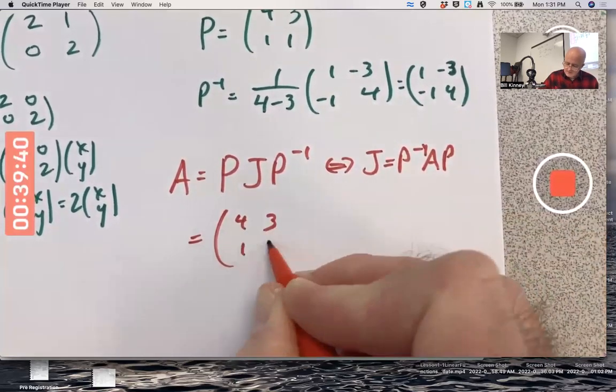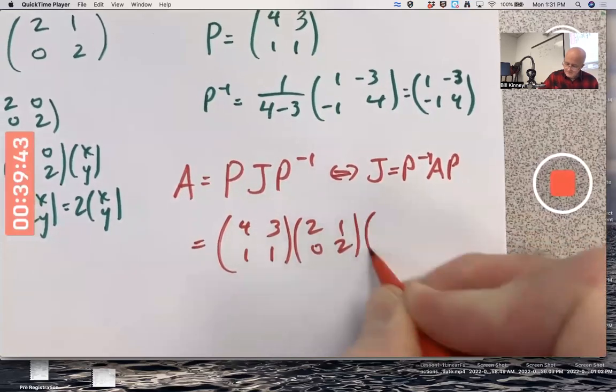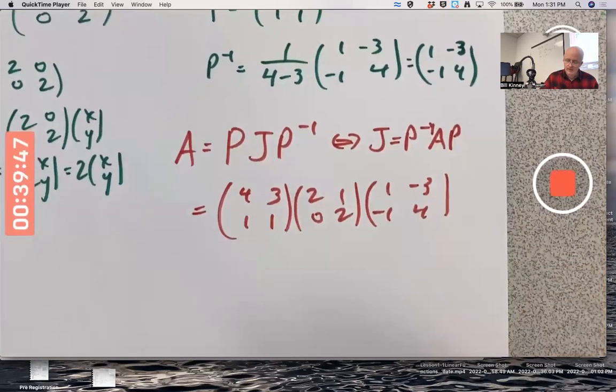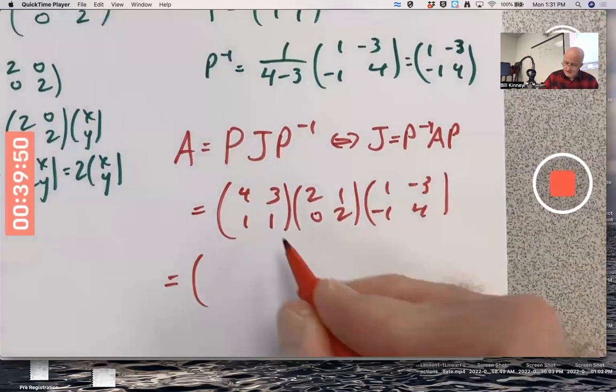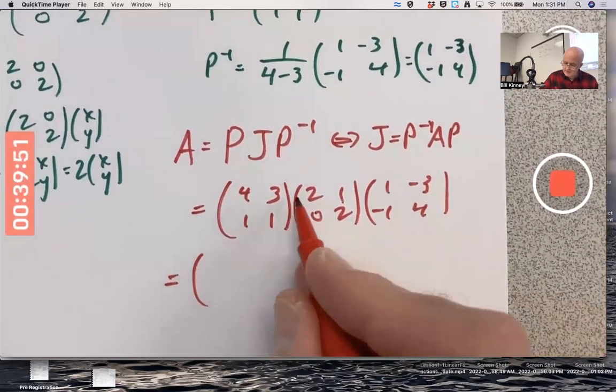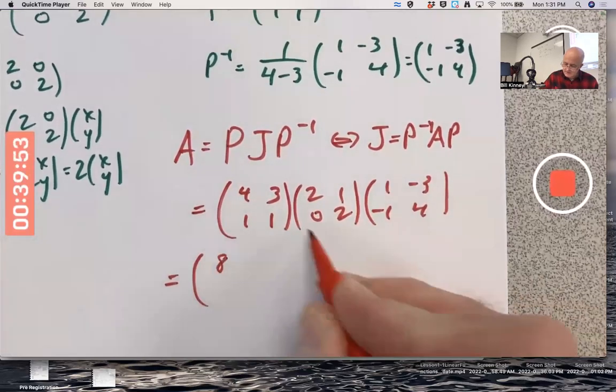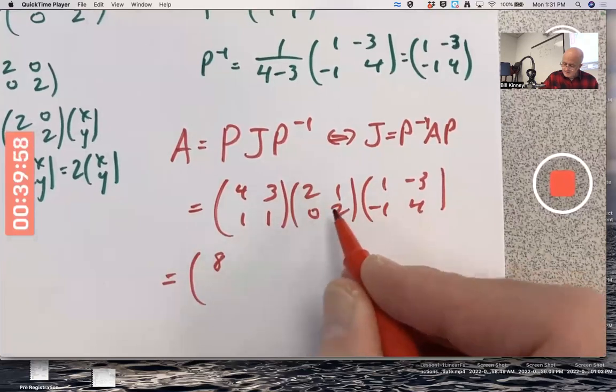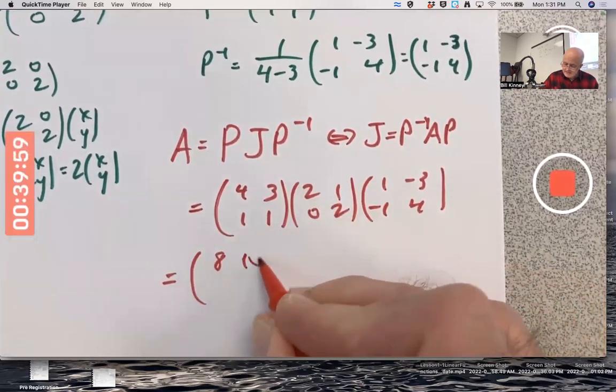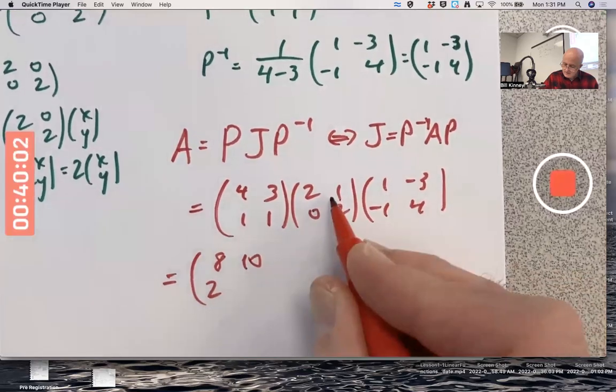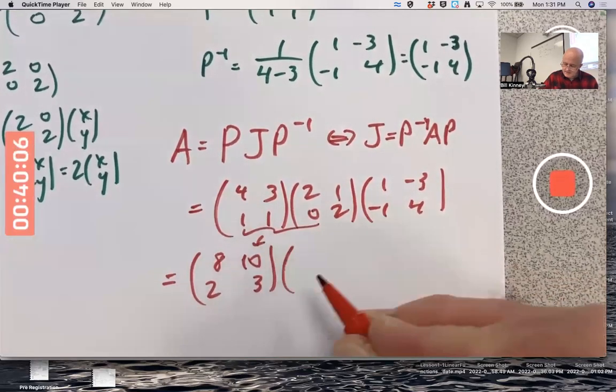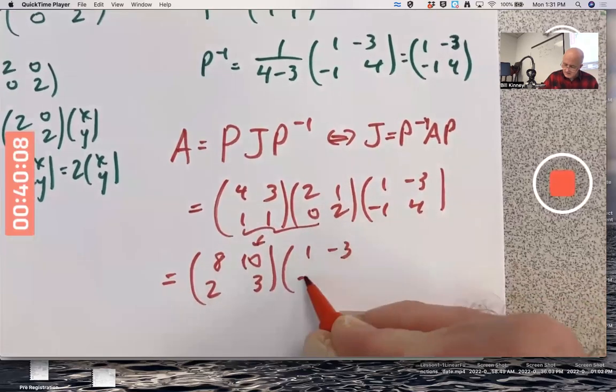Hang with me here. So let's see what happens when we do this. Multiply it out. I'll multiply the first two here. Four times two is eight. Three times zero is zero. Four times one plus three times two is going to be ten. One times two is going to be ten. Looks like the product of these two gives that. If I didn't make a mistake.